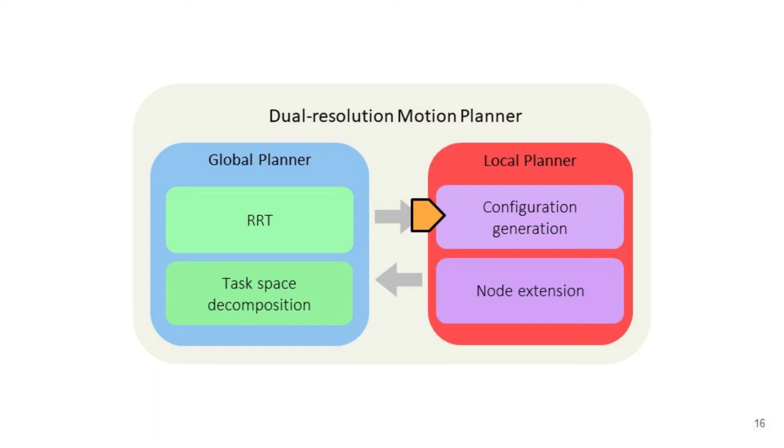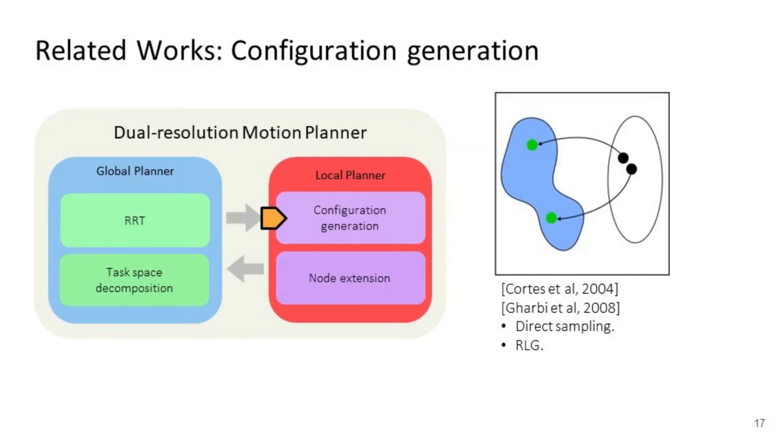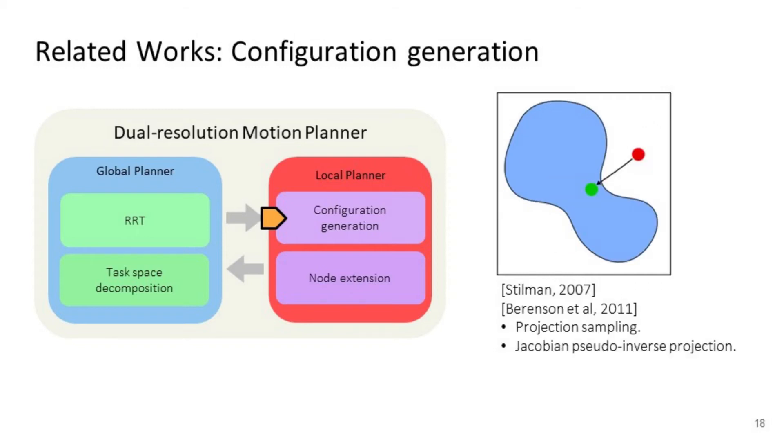To get a path in configuration space with complex constraints like closed-chain kinematic constraints, it is essential to get a valid configuration. Cortés and Siméon utilize a random loop generator to generate valid configurations, which falls into a direct sampling strategy. Our work is similar to Stilman's and Berenson's work in utilizing the